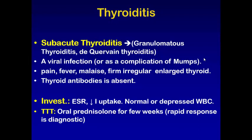We also have another type: subacute thyroiditis, also known as De Quervain's thyroiditis or granulomatous thyroiditis. It is considered to be a viral infection, and most commonly it is considered a complication of mumps. Microscopically, there are giant cells.